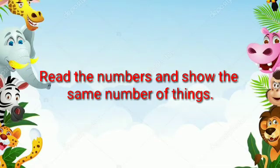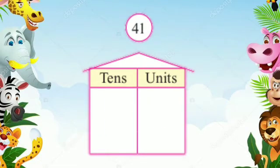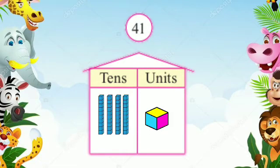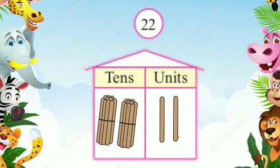Read the numbers and show the same number of things. 3 tens, 9 units — 39. 4 tens, 1 unit — 41. 2 tens, 2 units — 22.